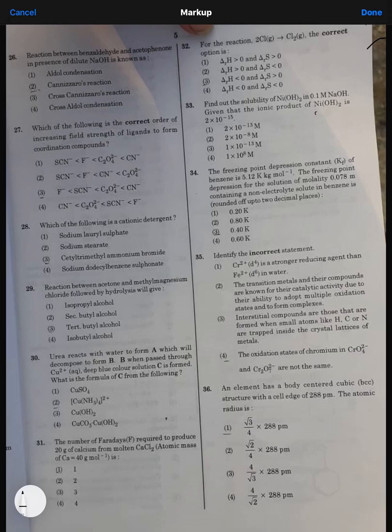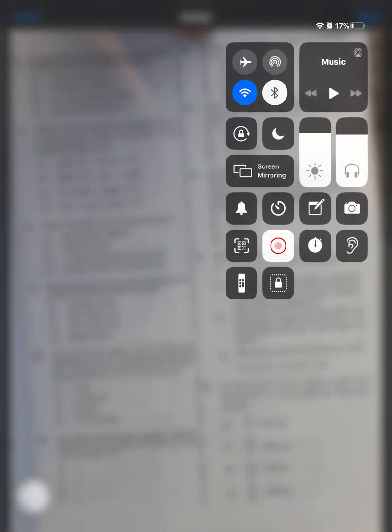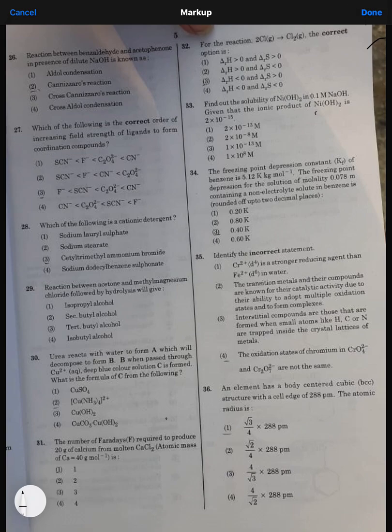Okay, now the next part of this NEET exam. Question number 26: reaction between benzaldehyde and acetophenone in presence of dilute NaOH. When we talk about dilute NaOH, it's used in both Cannizzaro and aldol reactions. But if only benzaldehyde is used, it shows Cannizzaro reaction. However, in this case we are also using acetophenone.